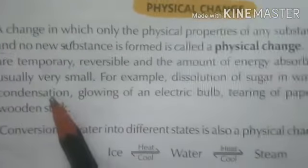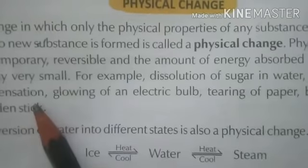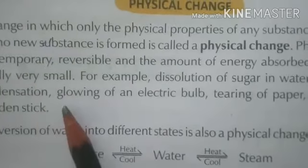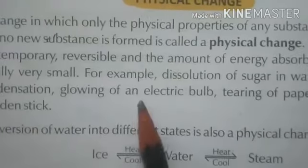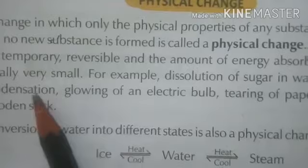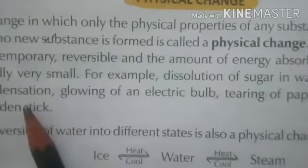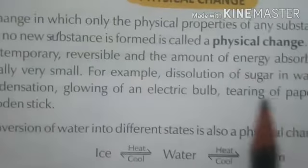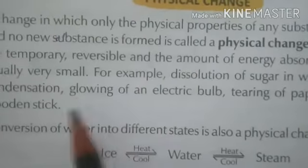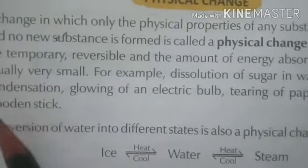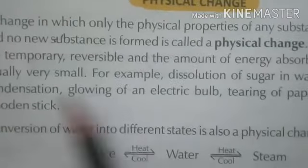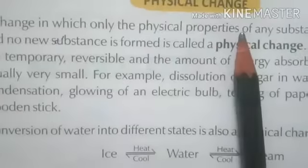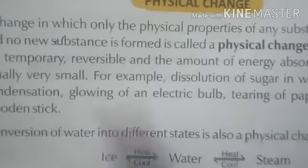Second: evaporation and condensation. When we convert ice into water by heating and water back to ice by cooling, it is also a reversible change and a physical change. No new substance is formed in this process. When we heat a liquid, it converts into water vapor — that is evaporation. And when we cool the water vapor, we get water again — that is condensation. So these are only changes of state, and a change of state is a physical change.